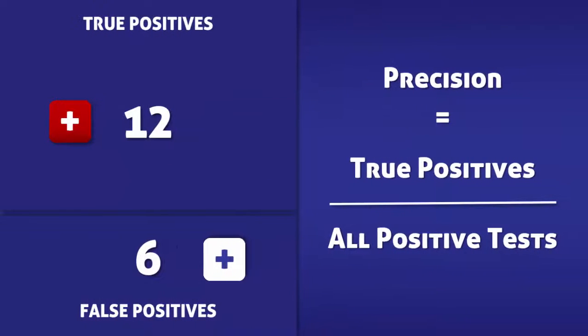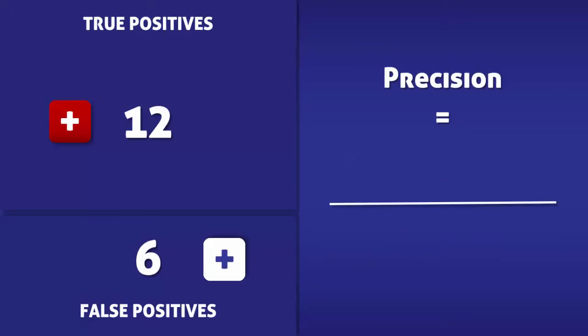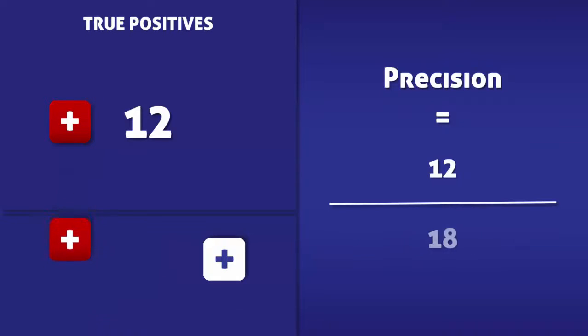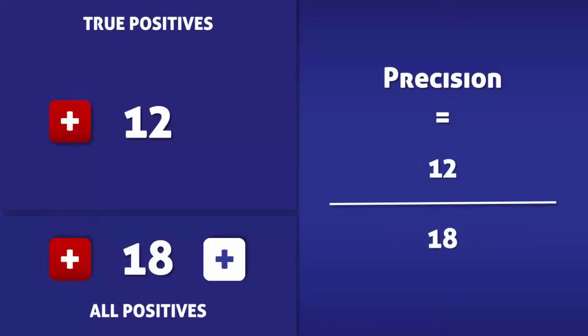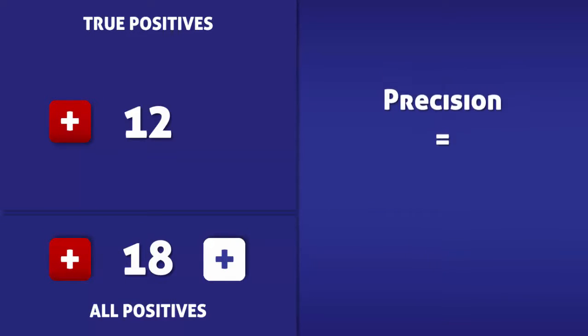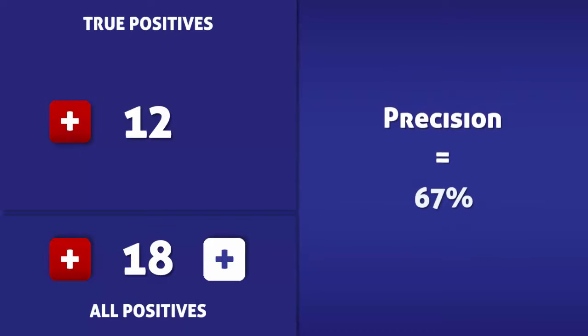The precision of the test can be calculated by dividing the number of true positives by the total number of positive tests. In this case, the precision of the test is 12 over 18, which is 67%.